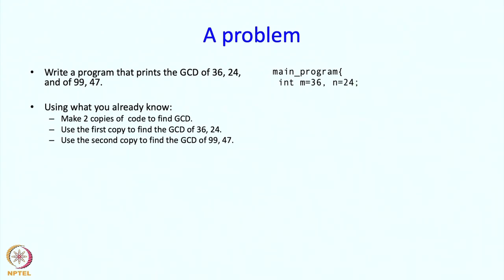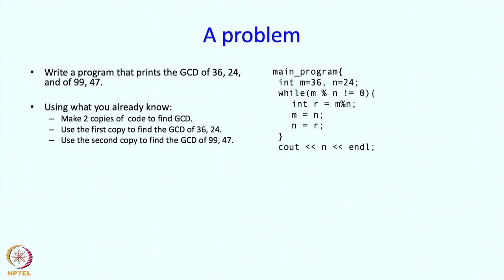In the main program we first define M to be 36 and N to be 24, then while M mod N is not equal to 0, we set R equal to M mod N, M equal to N, and N equal to R. This is the code you saw earlier for computing GCD. The GCD will be contained in variable N at the end, so we print it out. That finishes the first part.